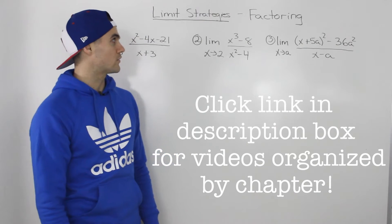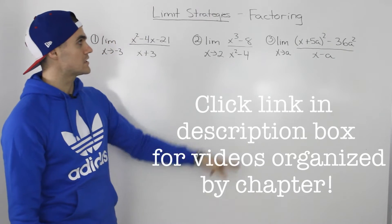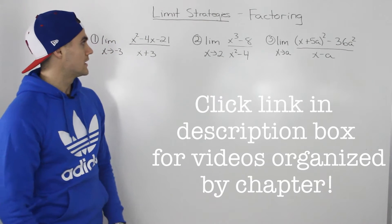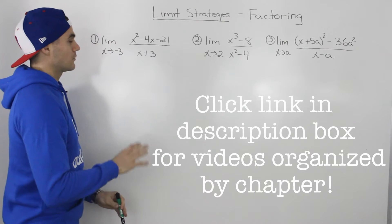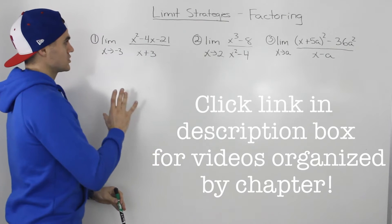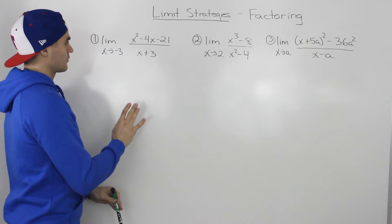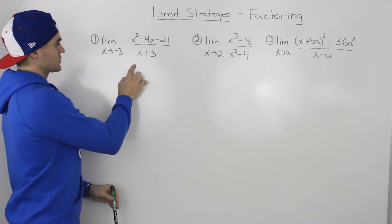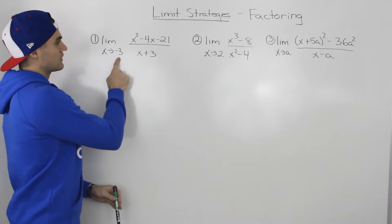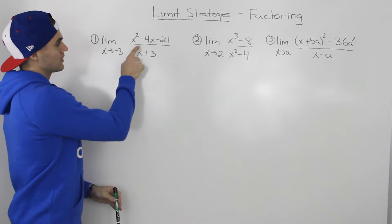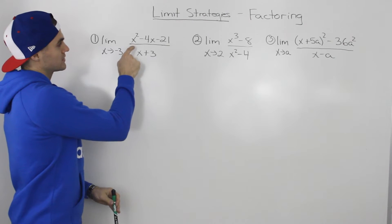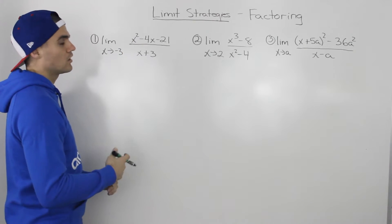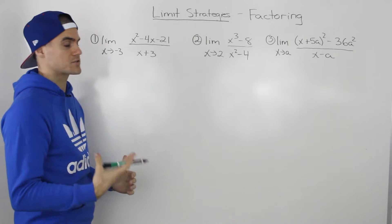The next strategy we're going to work with for solving limits is factoring. I'm going to explain this strategy by getting right into the example. So let's take this first example: the limit as x approaches negative 3 of the function x squared minus 4x minus 21, all over x plus 3.